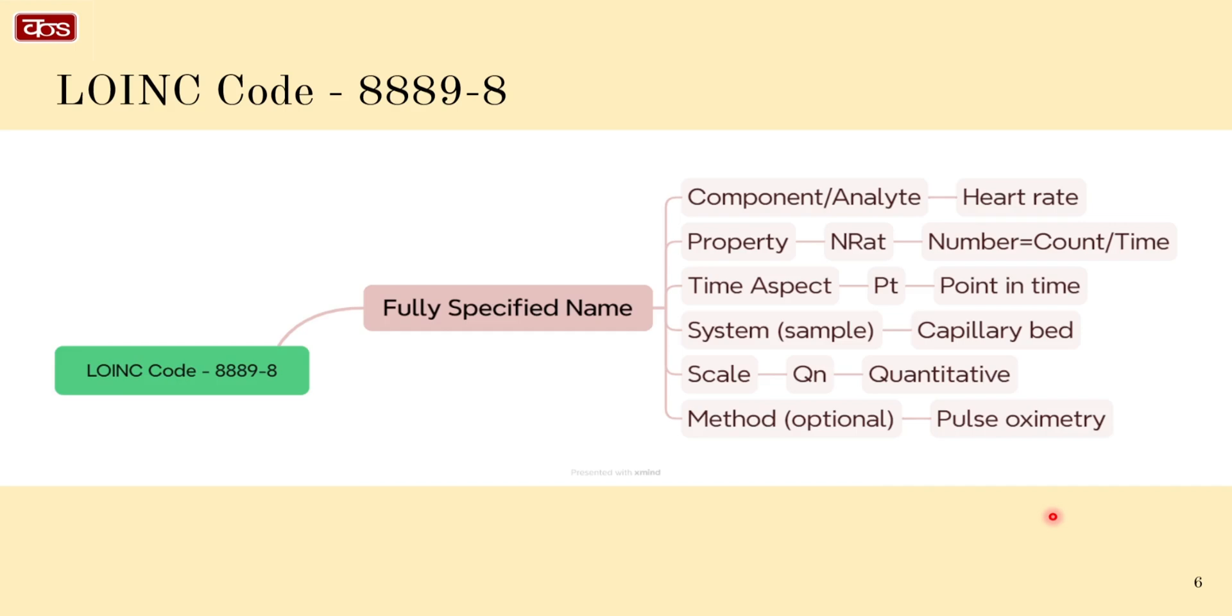This is the FSN in detail. The terms of the various parts are in US English; this is the norm used in LOINC. As you can see, the component or analyte is heart rate; property is NRat, short for number rate; time aspect is Pt, point in time; system sample is capillary bed; scale is Qn, quantitative; method is pulse oximetry.